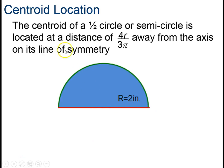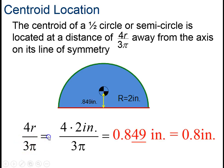For a circle, or for a semicircle, or a half circle, it's four-thirds the distance away from the line of symmetry going this way. For instance, in this example, if the radius is 2, the formula is 4r divided by 3 pi. So it would be 0.84 inches away this way.